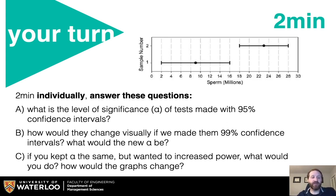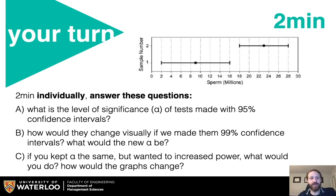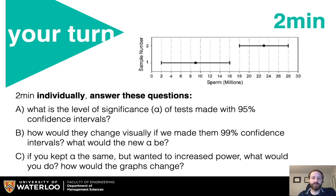To answer these questions: the level of significance of tests made with 95% confidence intervals is 5%, or 0.05, because it is the remaining part of the confidence. If we made them 99% confidence intervals, they would be larger visually, because we're allowing a larger range of values to possibly be correct. The new alpha would be 1%.